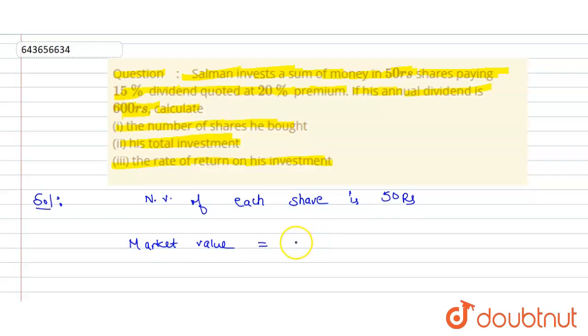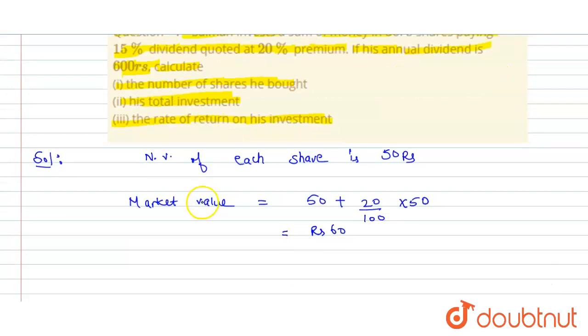Since the shares are quoted at 20% premium, market value will be 50 plus 20% of 50, which is 20/100 multiplied by 50. Solving it, we get it as rupees 60. So nominal value is 50 rupees and market value of each share is 60 rupees.